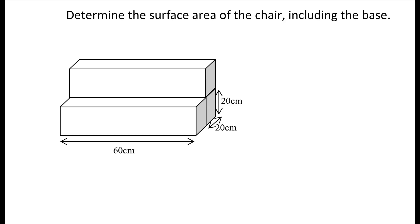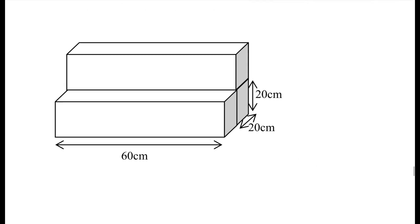The big thing we're going to have to look at is that surface area is all of the visible area on the outside of the shapes. Anywhere there's an overlap where a face of the rectangular prism is not showing, we have to make sure we're taking that away from our total surface area, because we don't want to add it if it is not part of the surface area.